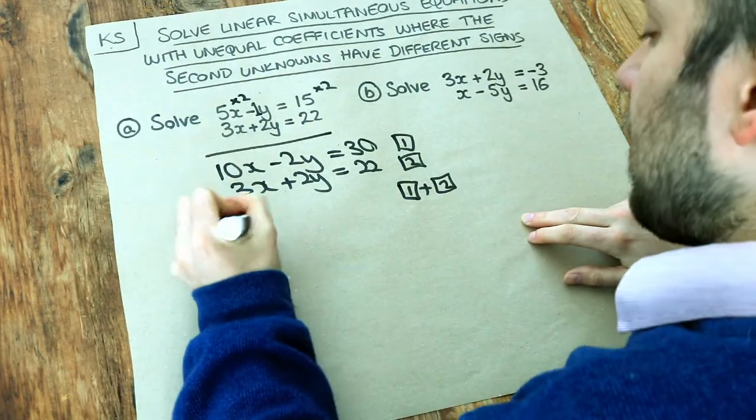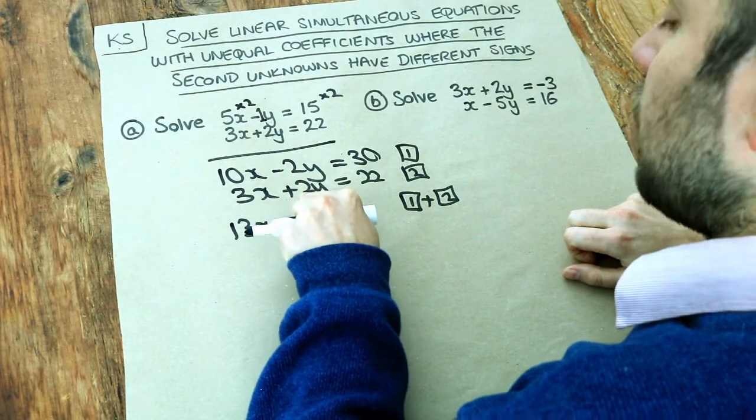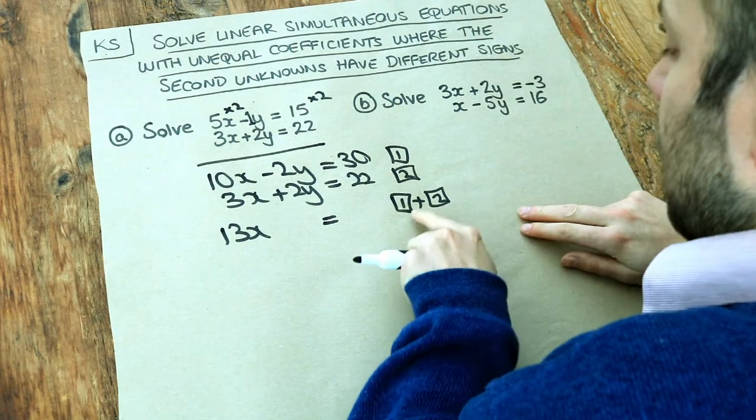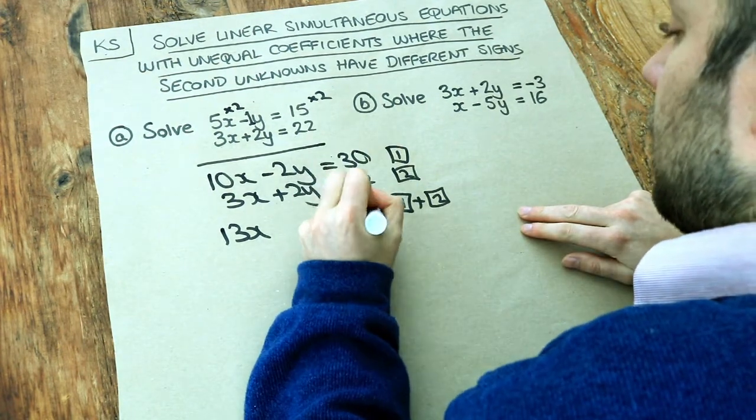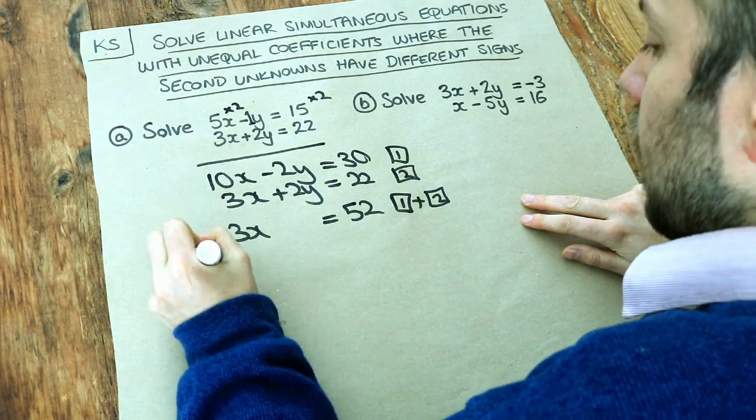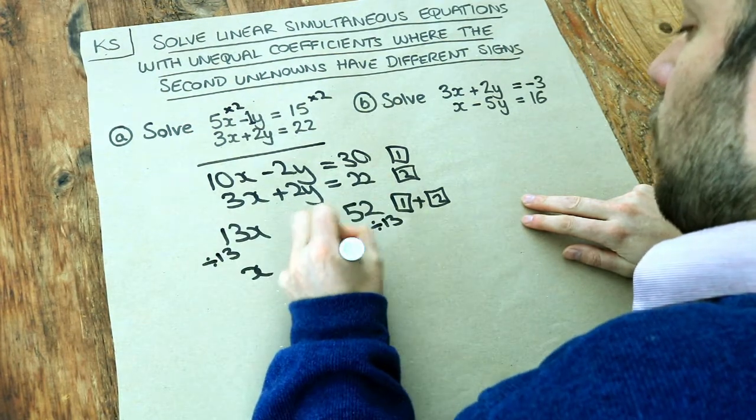10x plus 3x is 13x. Minus 2y plus 2y is 0y. That's great, they've cancelled, they've been eliminated. And we're adding these. 30 plus 22 is 52. And if x multiplied by 13 is 52, we just divide both sides by 13 to get x is equal to 4.